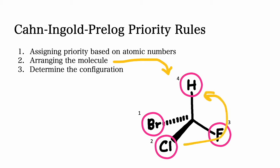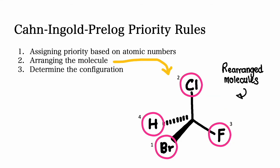The next step is to arrange the molecule so that the lowest priority substituent, which is usually hydrogen, is pointing away from you. This is only done if the lowest priority group is not initially oriented in this way.